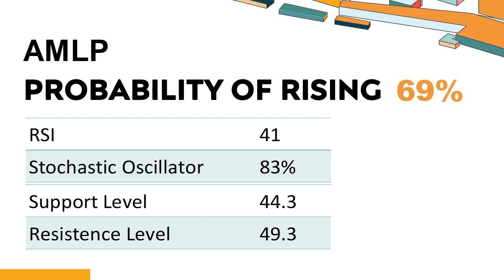AMLP's short-term support level is 45.6. If it falls below 45.6 during this session, it will have a chance to test 44.3. AMLP's short-term resistance level is 48.1. If it breaks through 48.1 during this session, it will look up to 49.3.